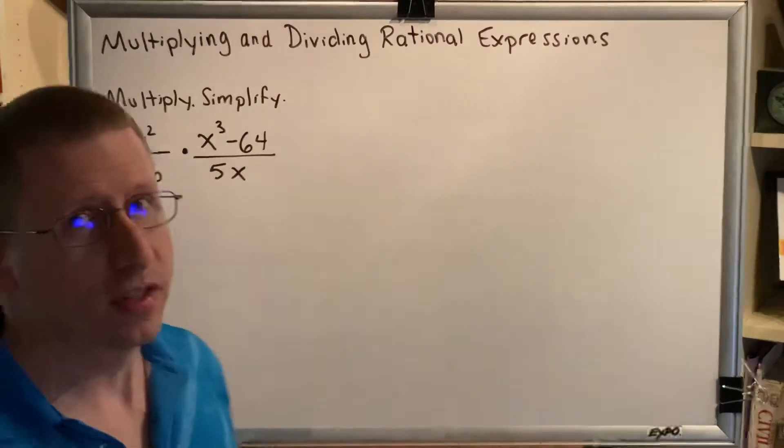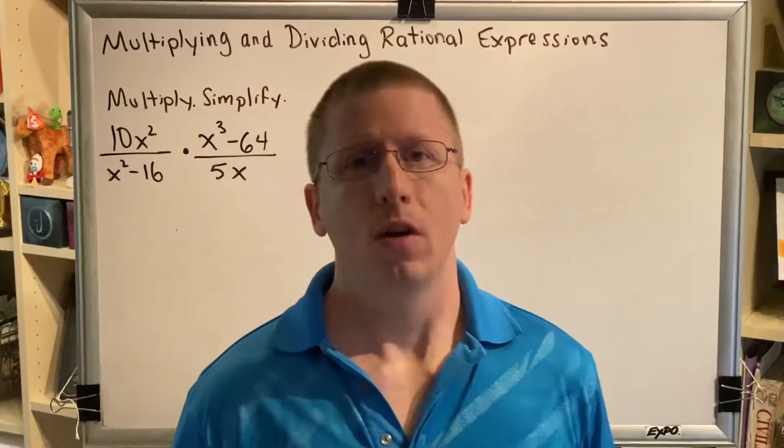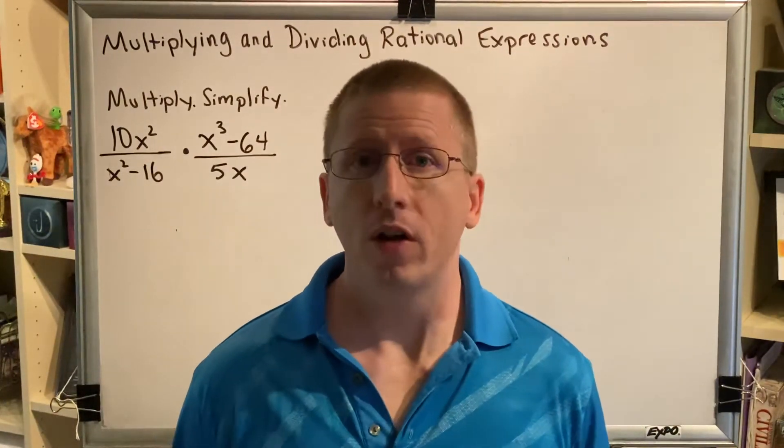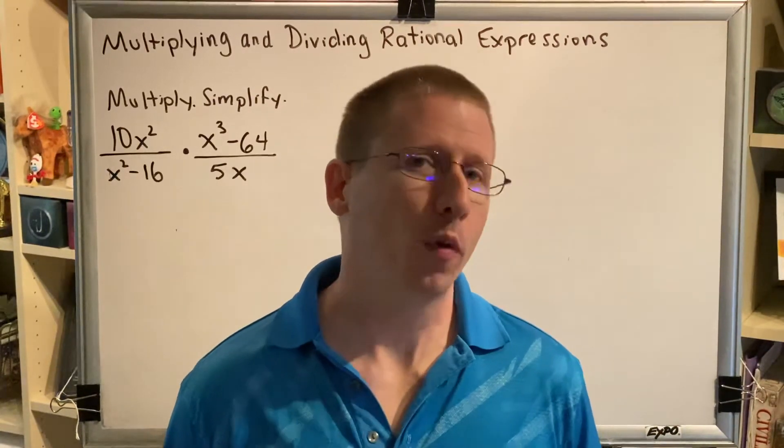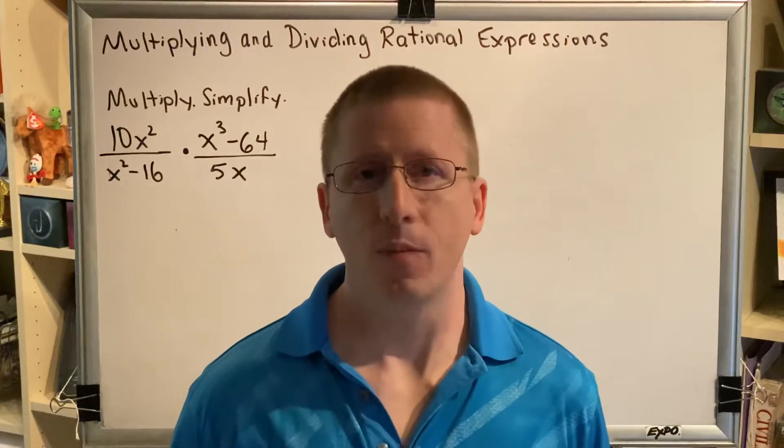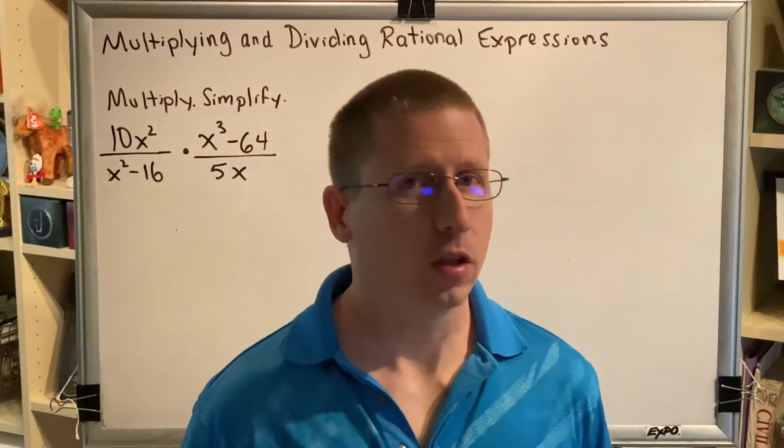Let's go through the steps. Step one: factor all numerators and denominators. Step two: use the multiplication rule to combine the multiple fractions into one. And step three: reduce that fraction to lowest terms.